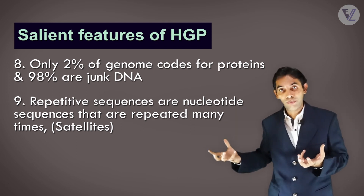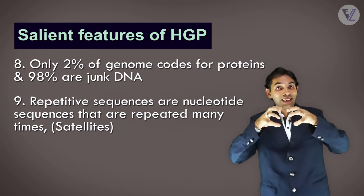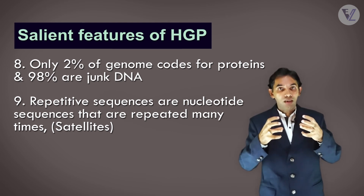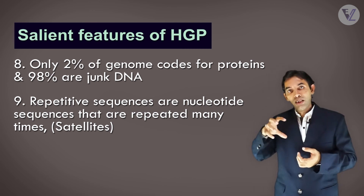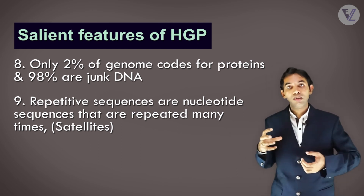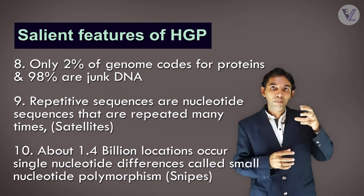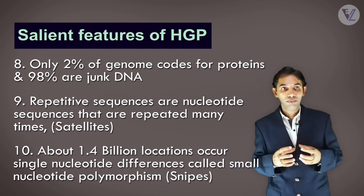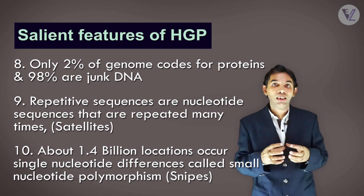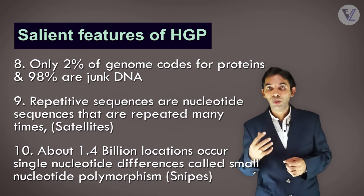Repetitive sequences make up a large amount of the human genome. These repetitive sequences of DNA are used in DNA fingerprinting. The repetitive DNA segments may repeat hundreds to thousands of times — we call them copy numbers — and are technically known as satellites. Finally, about 1.4 billion single base differences were found, called SNPs, which stands for Single Nucleotide Polymorphisms.